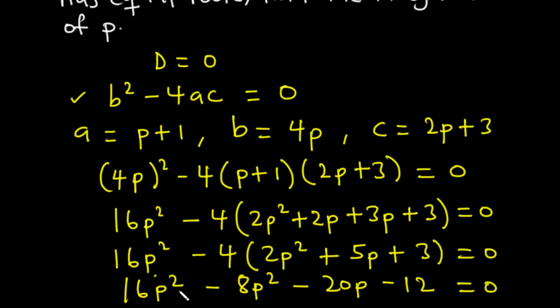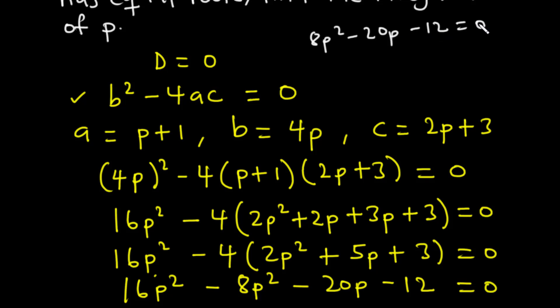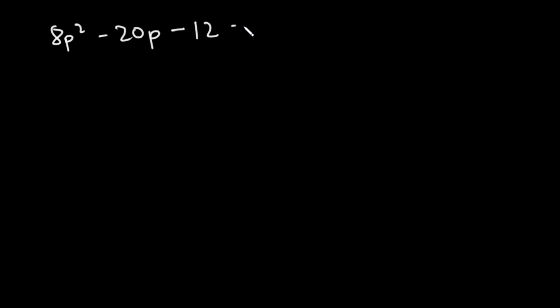So we have 16p² - 8p² - 20p - 12 = 0. Since 16 - 8 = 8, this simplifies to 8p² - 20p - 12 = 0.